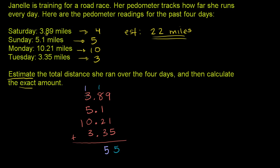In the ones place: 1 plus 3 is 4, plus 5 is 9, plus 0 is 9, plus 3 is 12. Write the 2 and regroup the 1. Then 1 plus 1 is 2. Remember the decimal point sitting right there, so the exact distance she ran was 22.55 miles. Our estimate of 22 miles wasn't too bad — we got reasonably close, within about a little over half a mile.